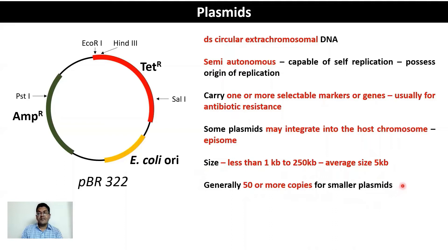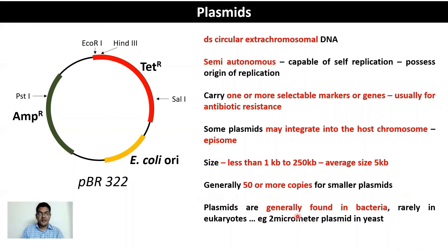Plasmids are a common feature in bacteria but can also occasionally be found in eukaryotes — for example, the two-micron plasmid found in yeast.